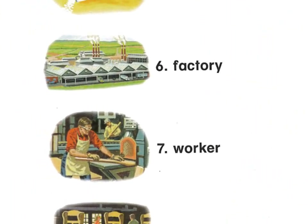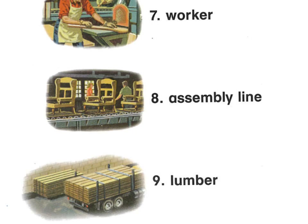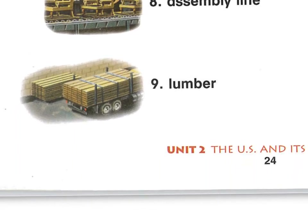In the factory you can see an assembly line, where a conveyor belt carries items and each worker or machine does something to them — that's manufacturing. The South is also known for lumber — wood cut from trees and shaped into smooth pieces used to build houses and buildings.